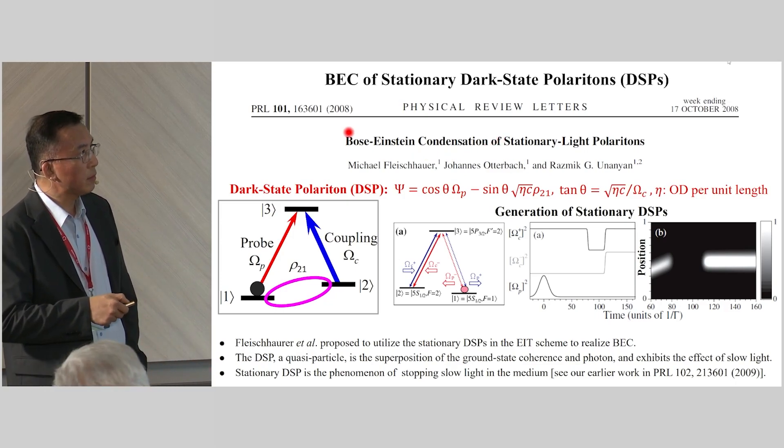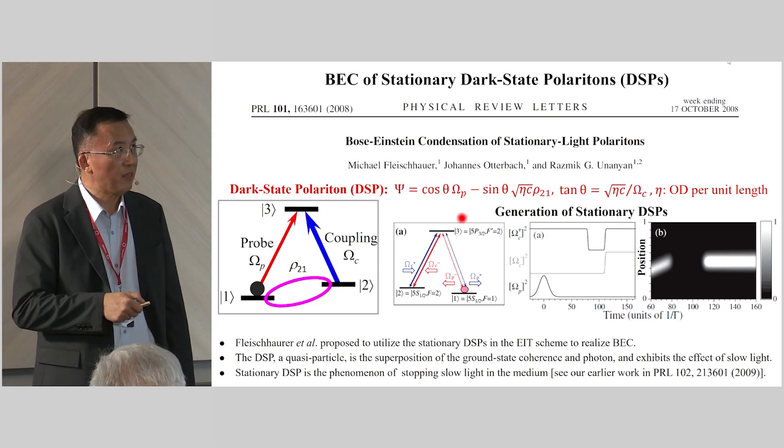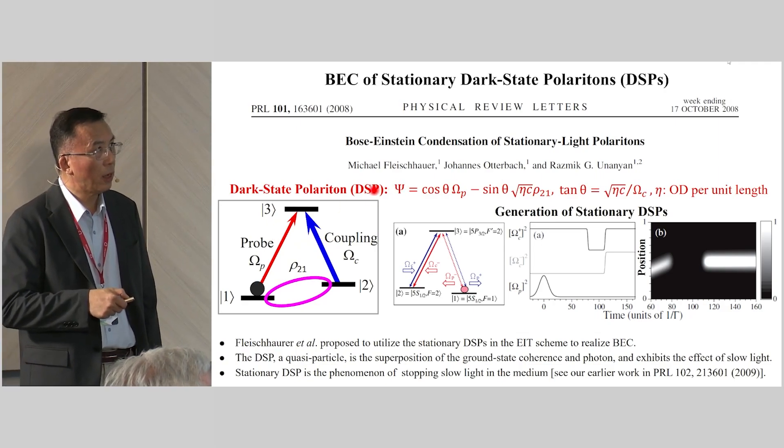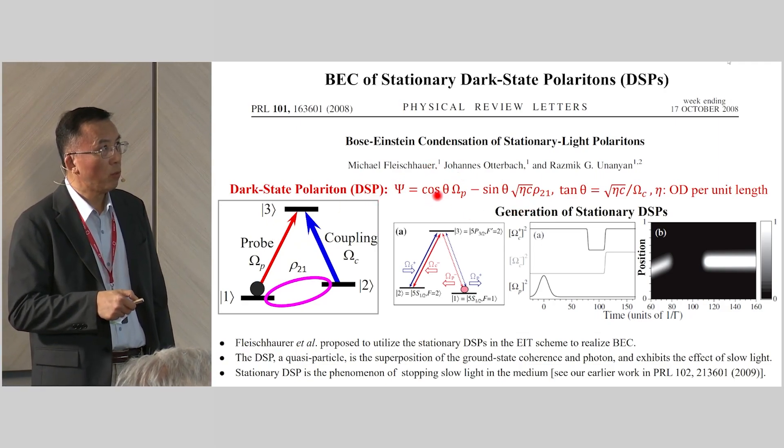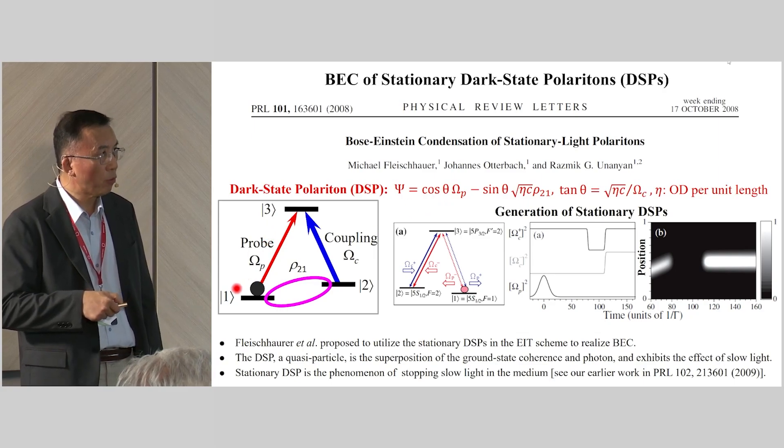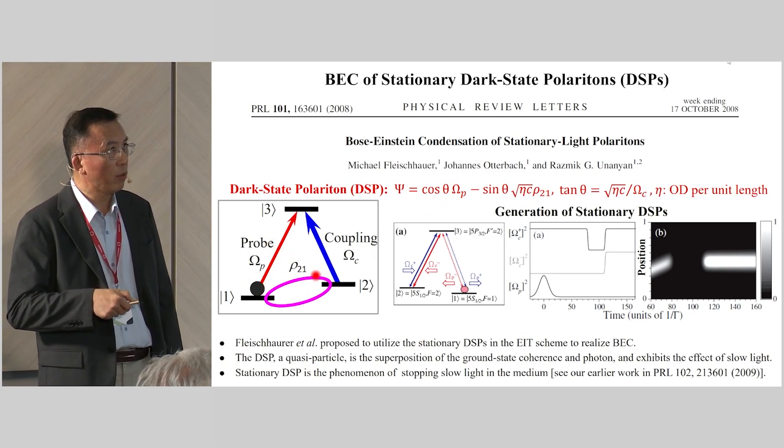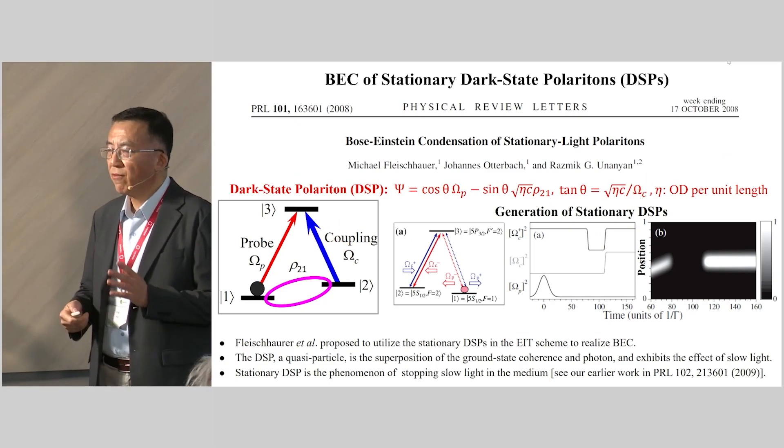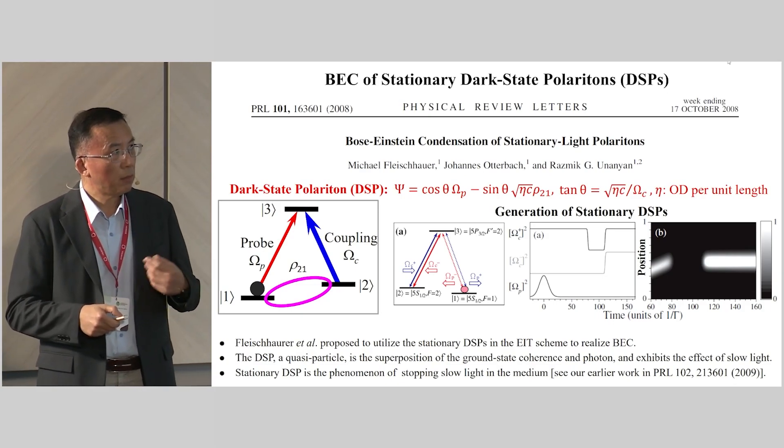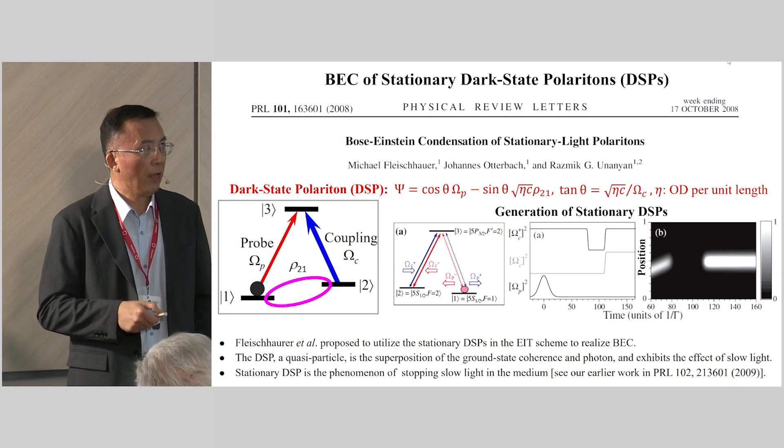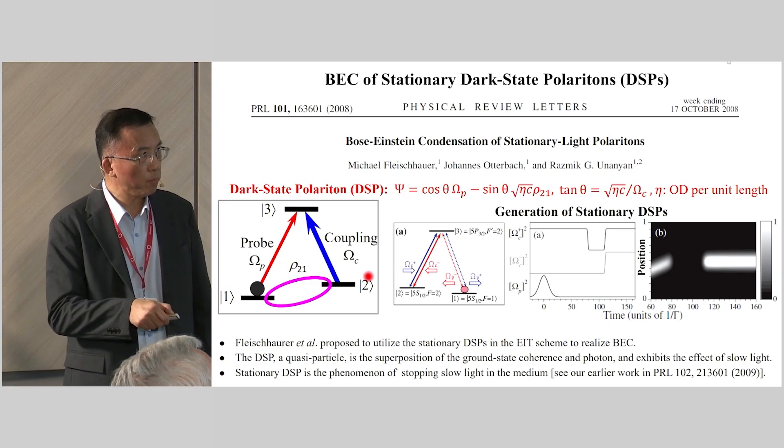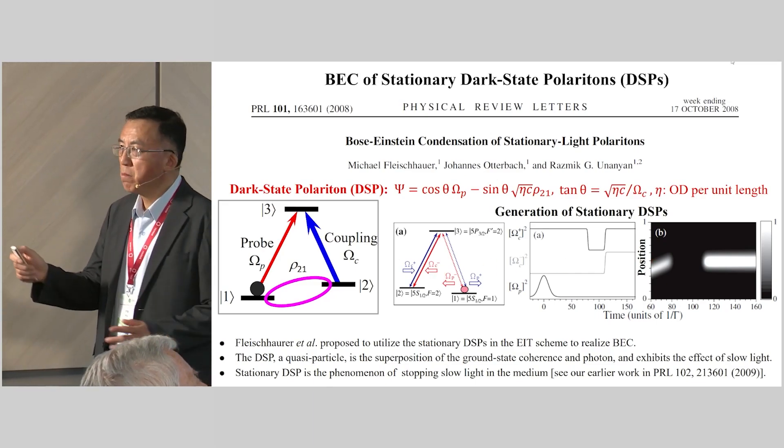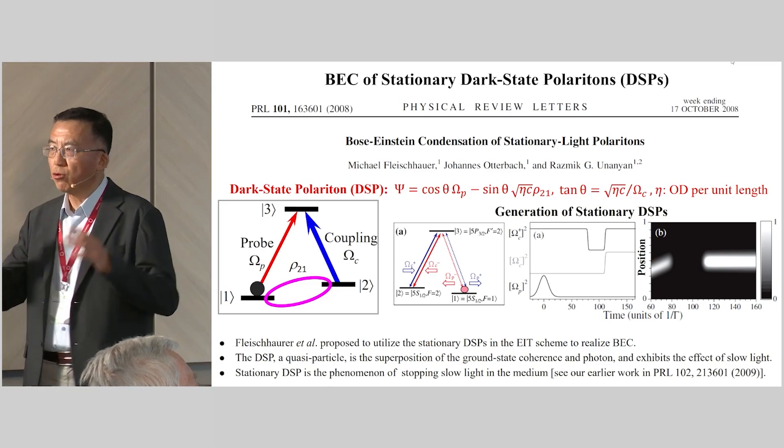Actually, the idea of creating a new type BEC has been there. In this paper, Fleischhauer and co-workers proposed to utilize dark-state polaritons, make them stationary to realize BEC. Dark-state polariton, or DSP, is the superposition of the probe field and the ground-state coherence. They can be given by this expression, where omega_P is the probe Rabi frequency, rho_21 is the ground-state coherence, and omega_C is the coupling Rabi frequency. One year after the proposed idea, my group has realized the stationary DSP.